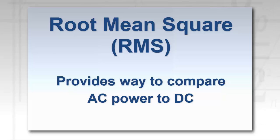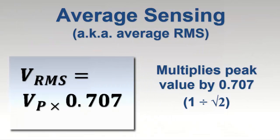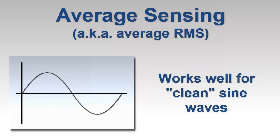Some low-end instruments employ a technique known as average sensing, sometimes referred to as average RMS. This entails multiplying the peak AC voltage or current by 1 over the square root of 2, or 0.707. For electrical systems where the AC cycle is sinusoidal with undistorted waveforms, this can produce accurate and reliable results.